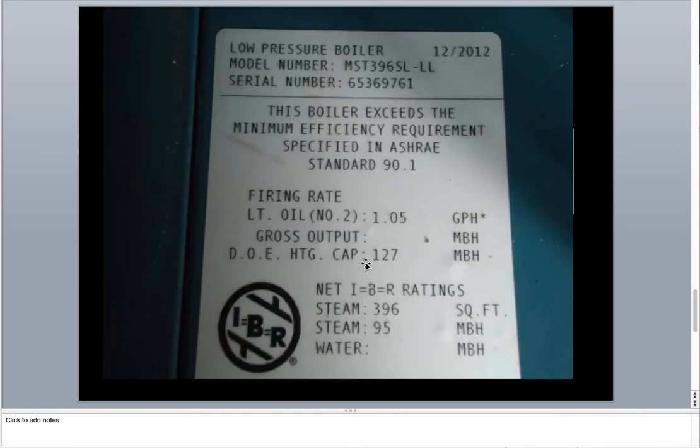Here's your DOE heating capacity. This is more of a normal size house here. 396 square feet of steam. This is off a real boiler. If you'd use an oil, 1.5 gallons per hour. So it's a decent size boiler. Nothing crazy, but probably average for a steam boiler. Not the smallest. Definitely not the biggest.